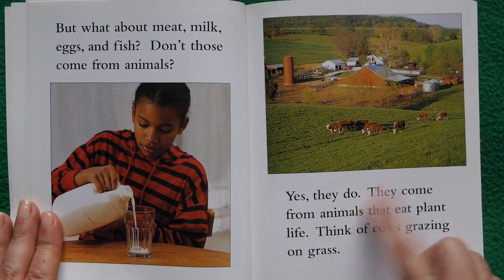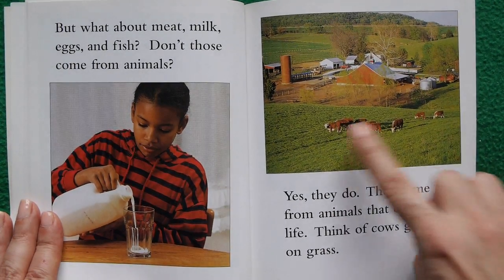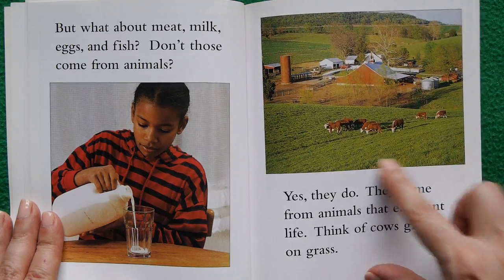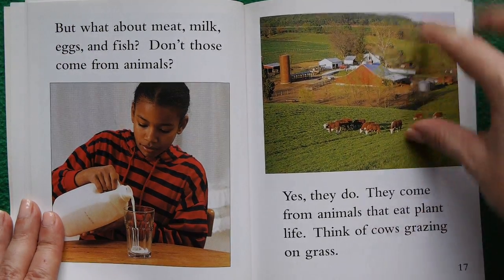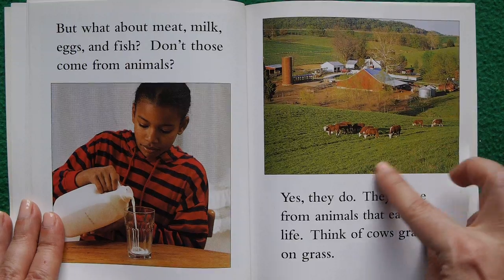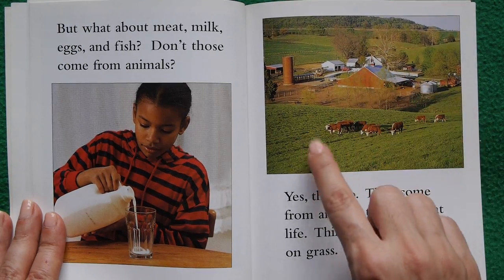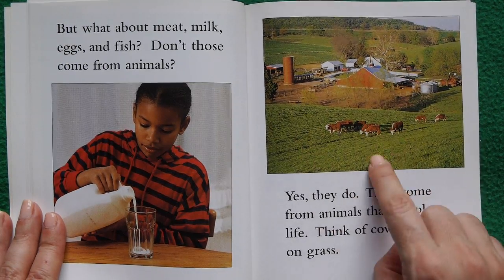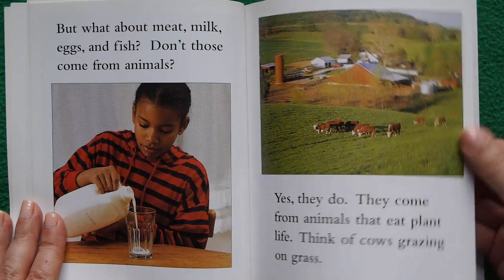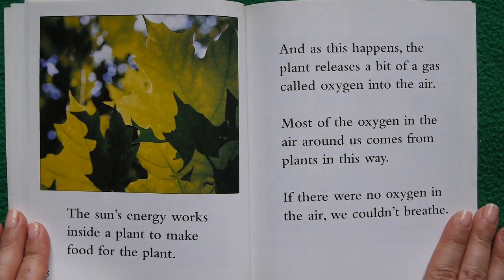But what about meat, milk, eggs, and fish? Don't those come from animals? Yes, they do — they come from animals that eat plant life. Think of the cows grazing on grass. So everything depends on the sun: the sun grows the grass, the grass feeds the cows, and the cows feed you.